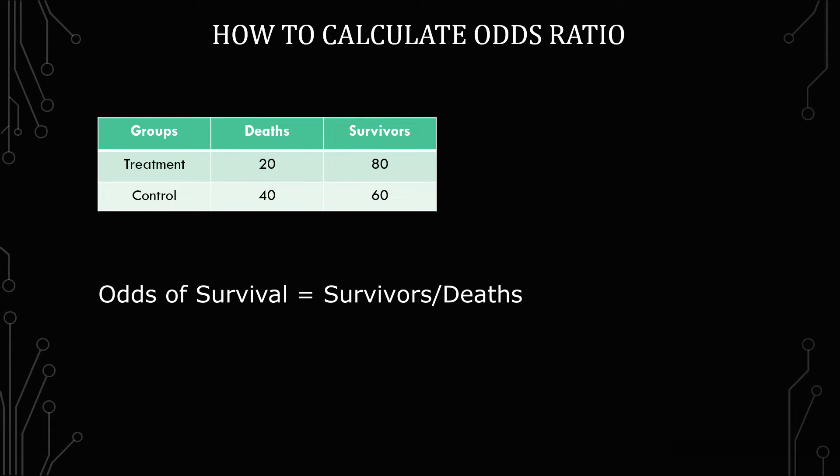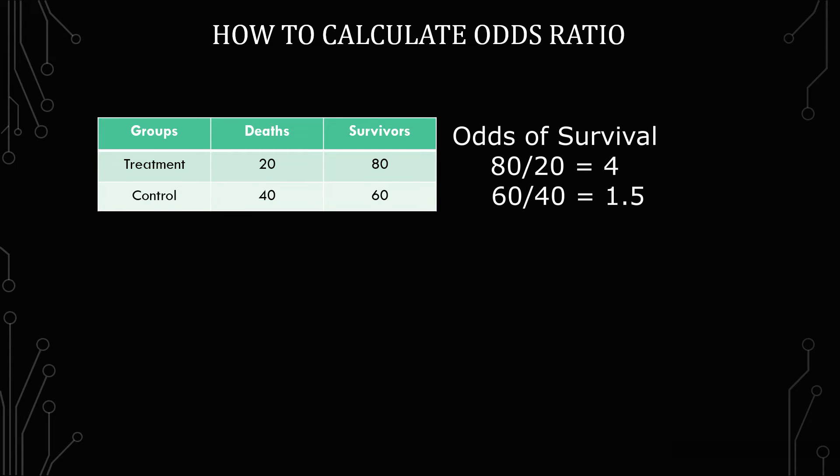I'm going to do the odds of survival. What that means is in the numerator, I'm going to use survivors. In the denominator, I'm going to be using deaths. For treatment, it's 80 over 20, which equals 4. For control, it's 60 over 40, which is 1.5.